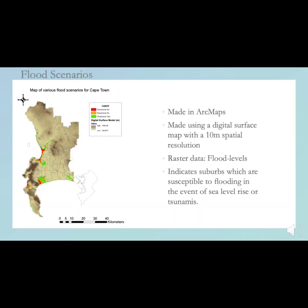We also conducted a flood scenario study for the Western Cape. This plot was made using a digital surface model with a 10 meter spatial resolution. Different arguments were formed using the RASTA calculator tool to visualize various flood scenarios, namely flood levels of 3, 5, and 10 meters. The shading of flood levels in red, orange, and green indicates the severity and extent of flooded areas, with areas shaded in red being the most likely to be affected.